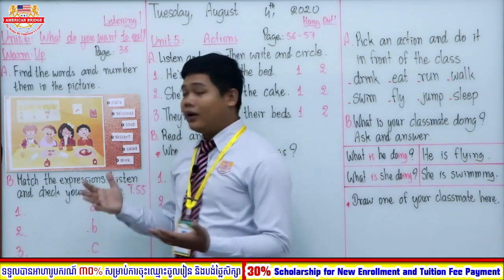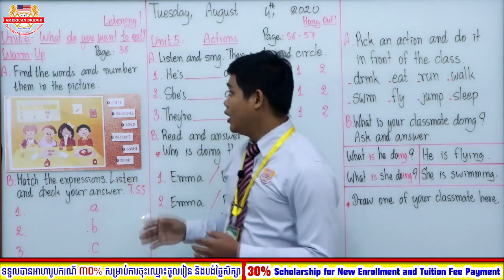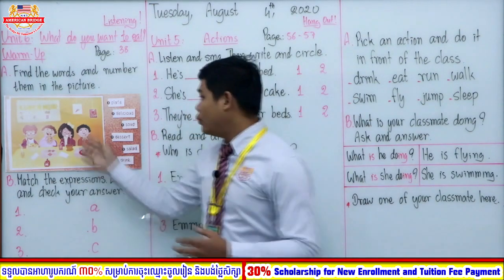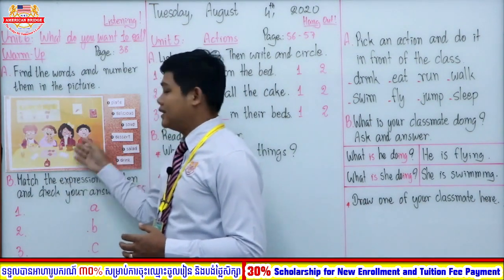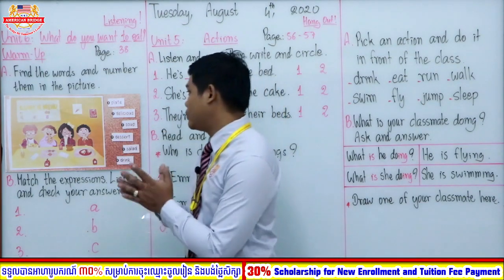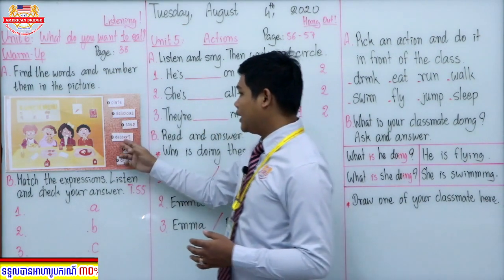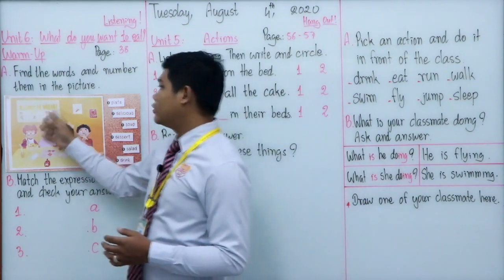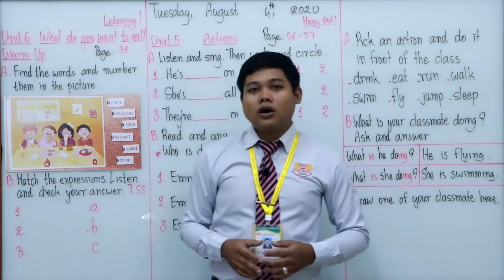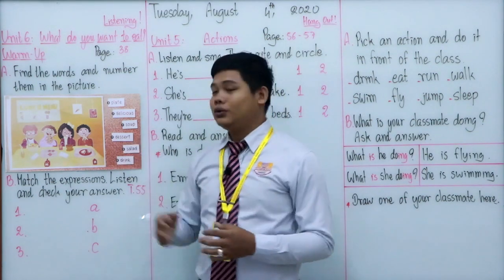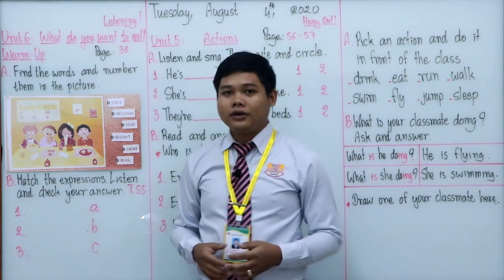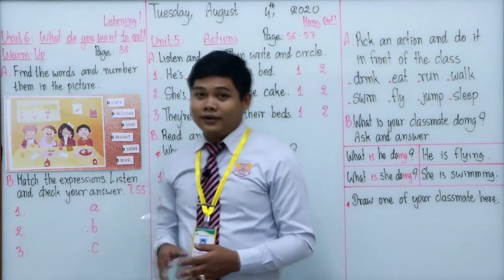Now let's move to our exercise. Section A: find the word and number them in the picture. We have six vocabulary words — plate, delicious, soup, dessert, salad, and drink — and we need to find them in the picture and write the number on each one. I'll give you five minutes to do this exercise. You can pause the video and when you come back, let's check the answers together.